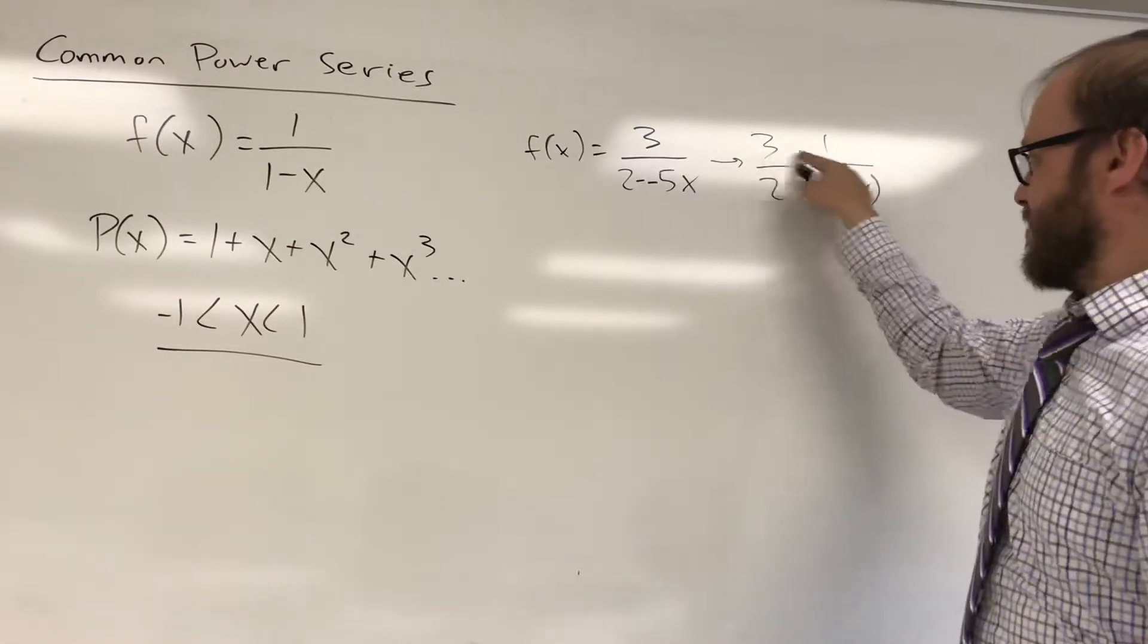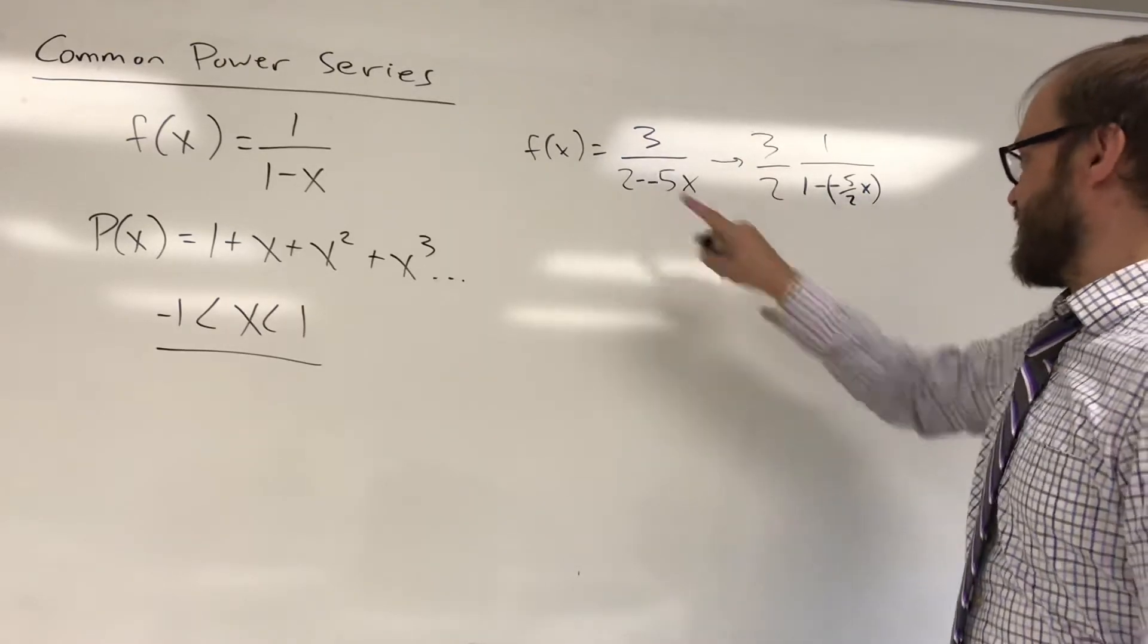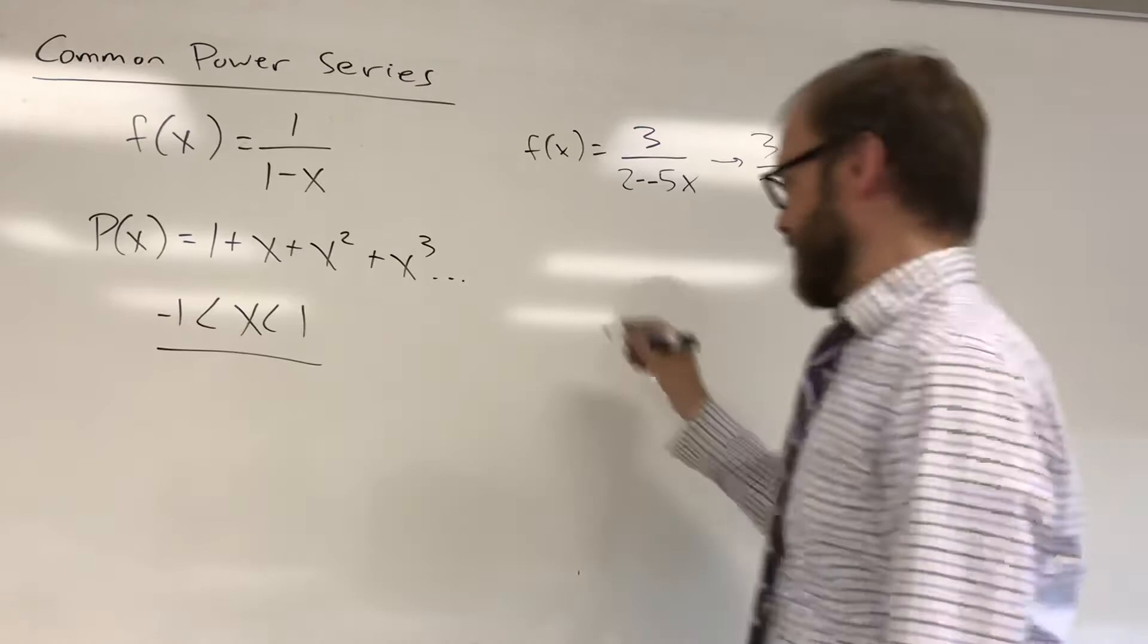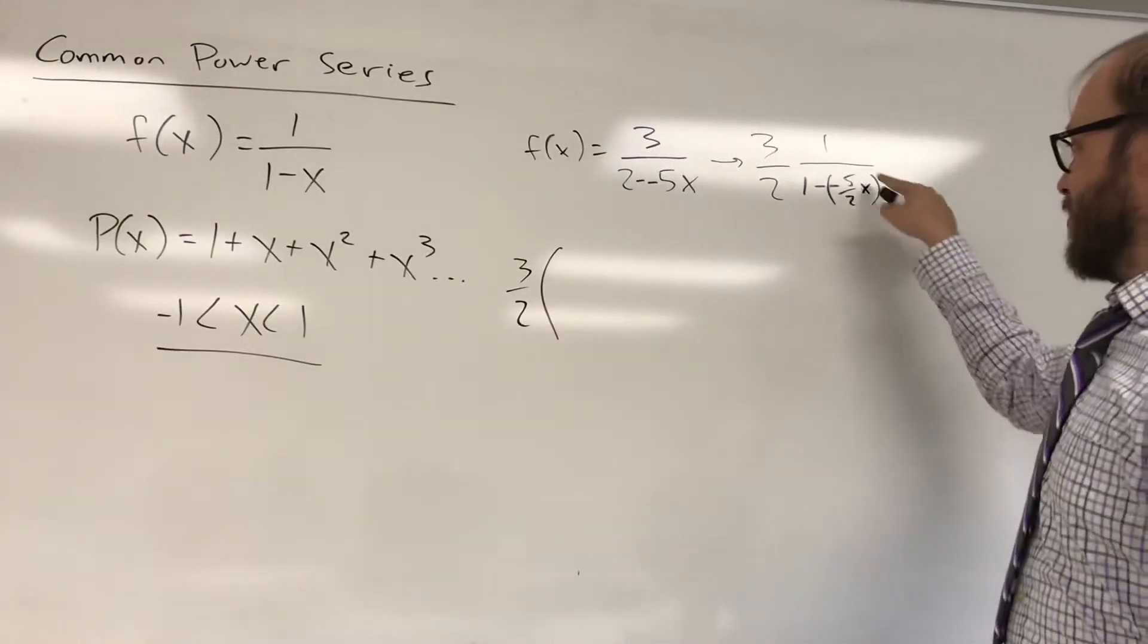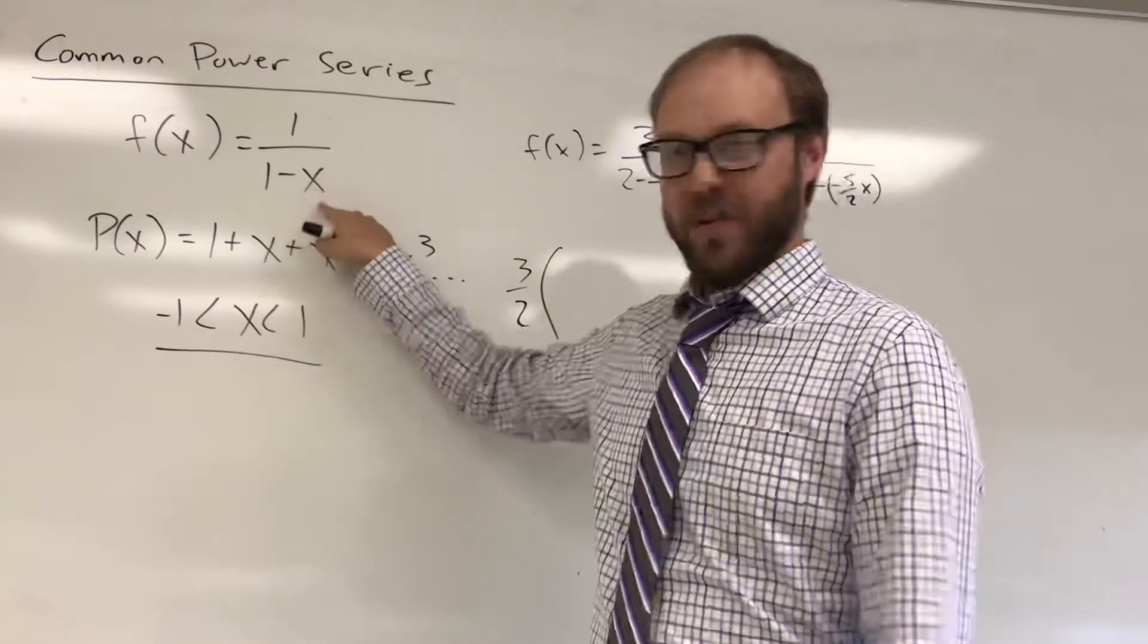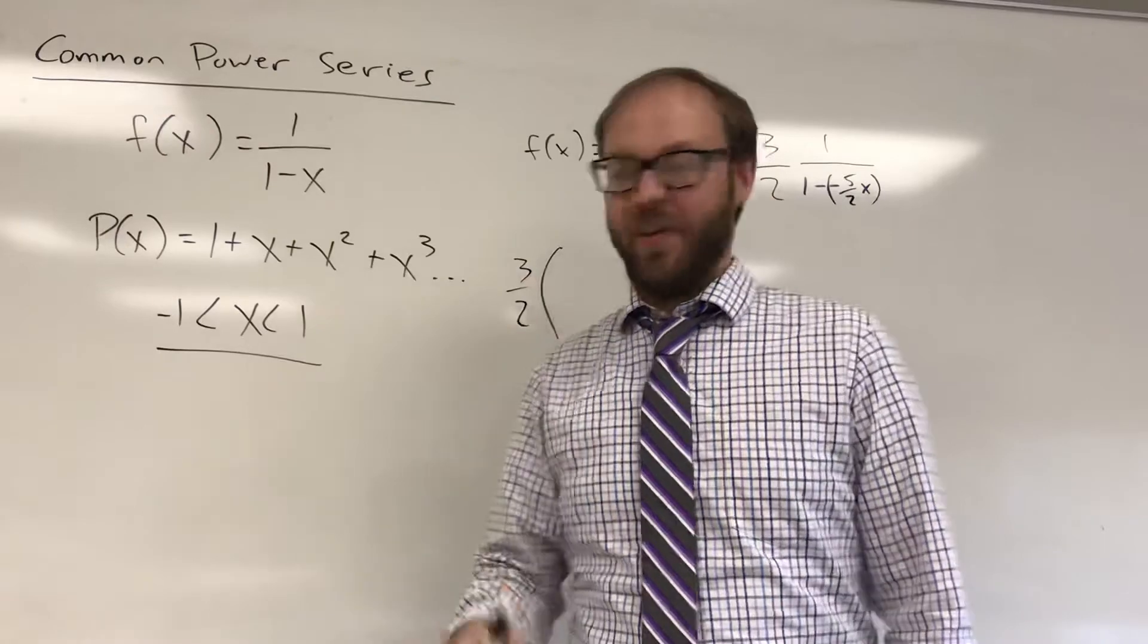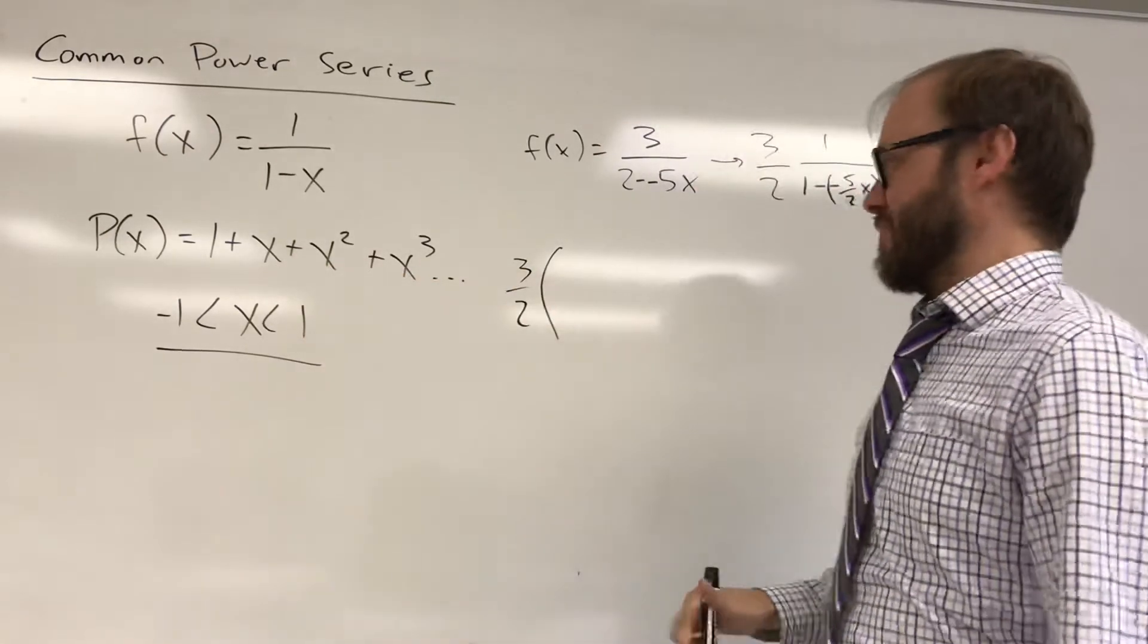And if you multiply this, you get 3 on top. If you multiply here, you're going to get this on the bottom. So again, you just have that 3 halves constant out in front being multiplied. And your input value is going to be negative 5 halves x. That's going in place of that x right there. So you're replacing your input with negative 5 halves x in each of those positions.